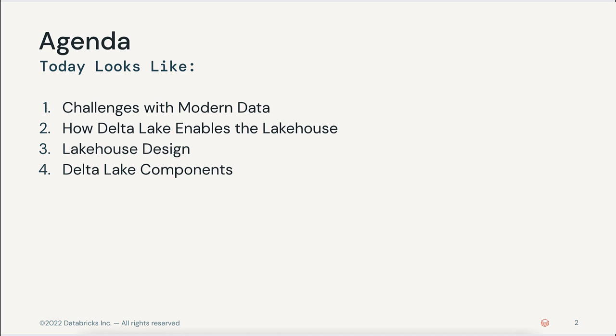After we do that in code, we'll want to discuss the components that Delta Lake is made up of. We'll discuss three: the Delta table, the commit service, and the Delta engine.